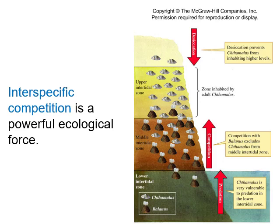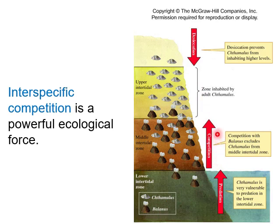Now, what about interspecific competition? When members of different species compete for resources, one species may be forced to move or become extinct, and the two species may share the resources and coexist. We can say that interspecific competition is a powerful ecological force. For this concept, let's have a look at the diagram. Here you will see two barnacle species: Cathamillus and Balanus. There are three zones: the lower intertidal zone, the middle intertidal zone, and the upper intertidal zone.